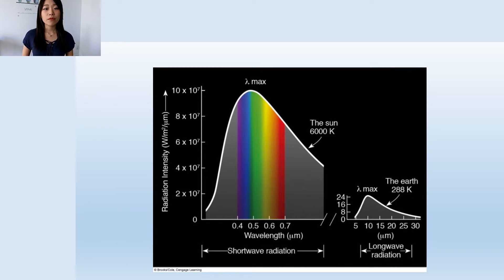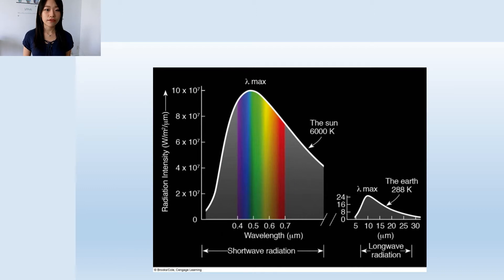For example, for the Sun, its temperature is around 6000 Kelvin. Using the Planck's function, we get a curve like this on the left. And using Wien's law, we can find that the maximum radiation emitted by the Sun is around 0.5 micrometers, which is in the range of visible light.